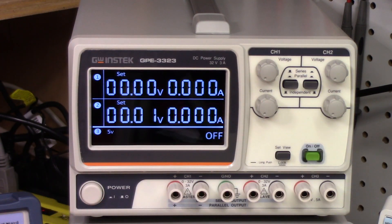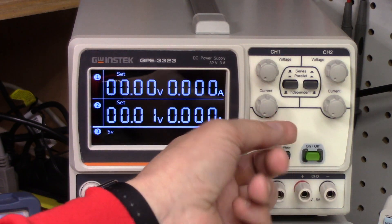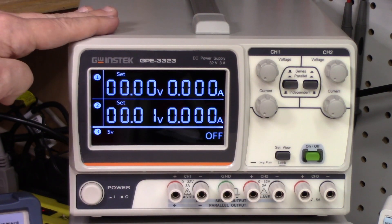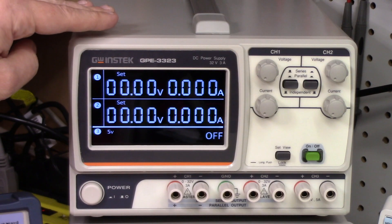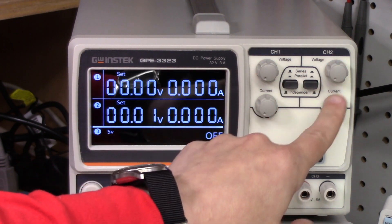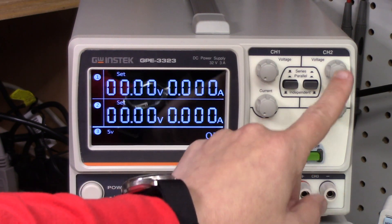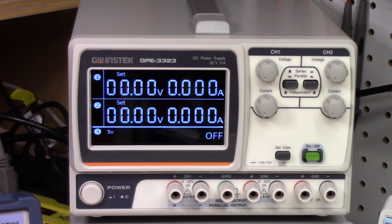And we'll simply point out that the single channel version of this line has a... Instead of the channel 2 controls, they have fine tuning controls for the current and the voltage. So I think that means a multi-turn pot. But with the real estate, limited real estate on the front face here, they decided not to offer that for the 2 and the 3 channel versions of this power supply.